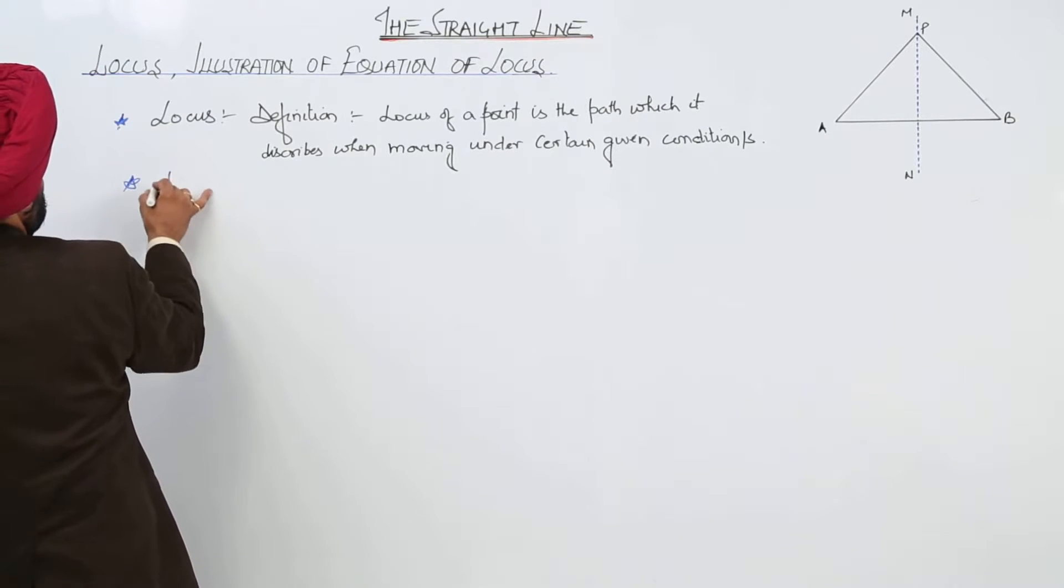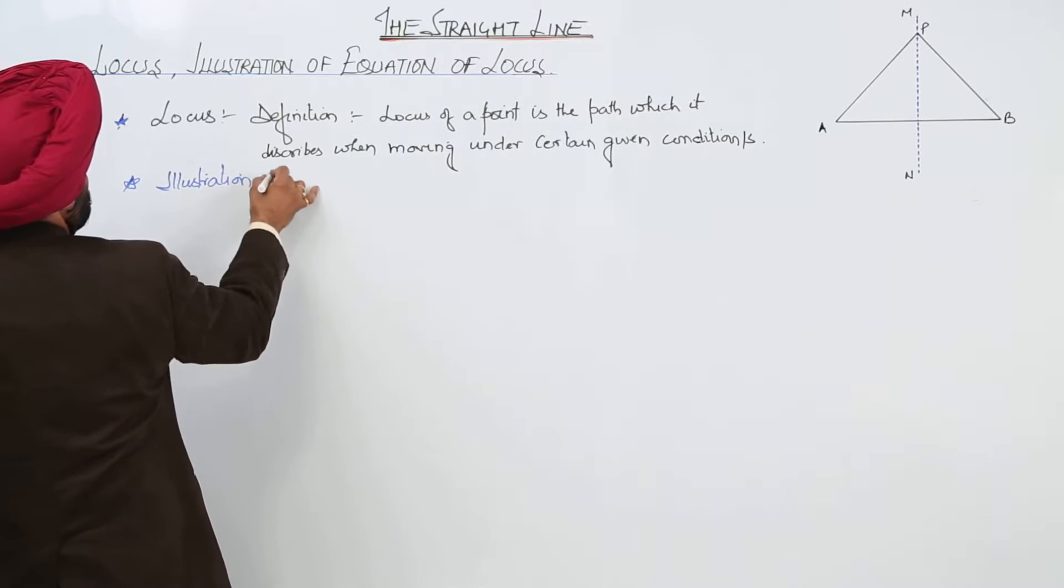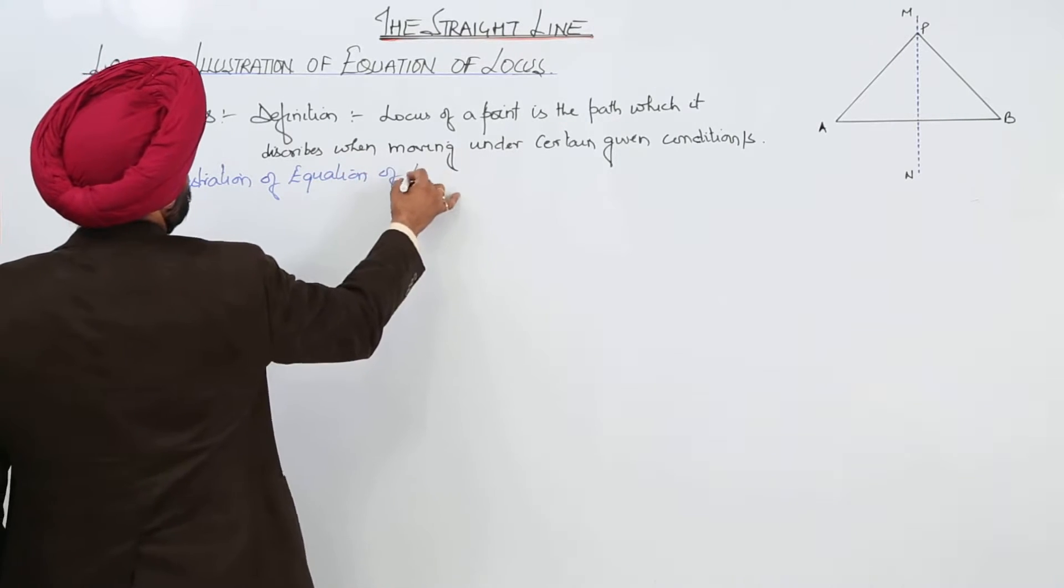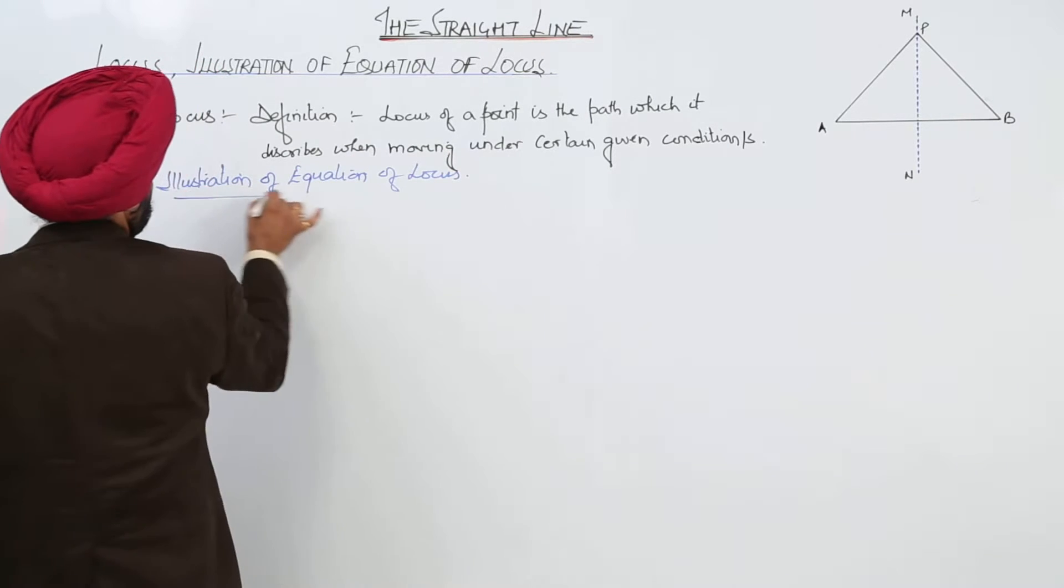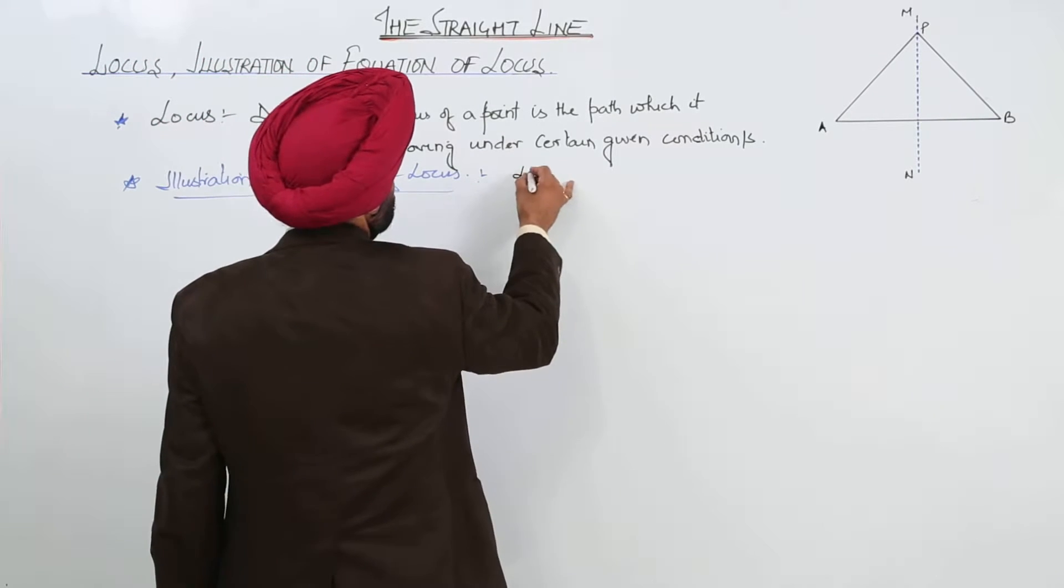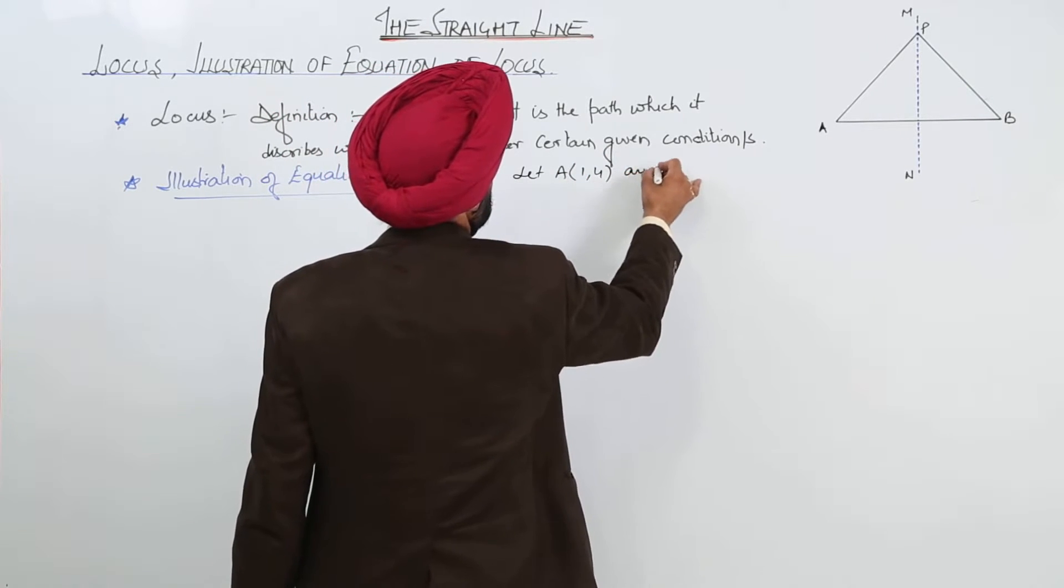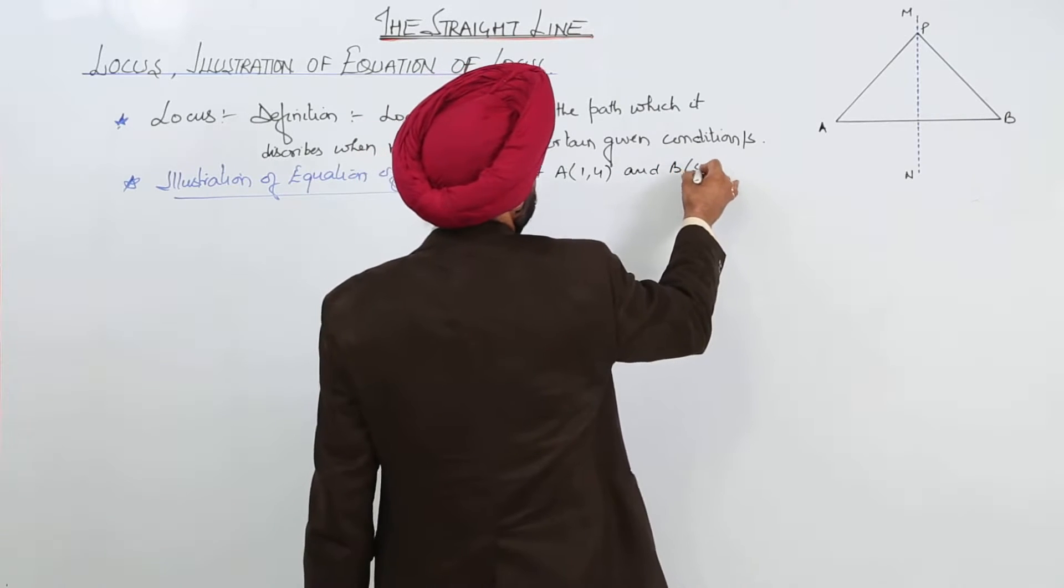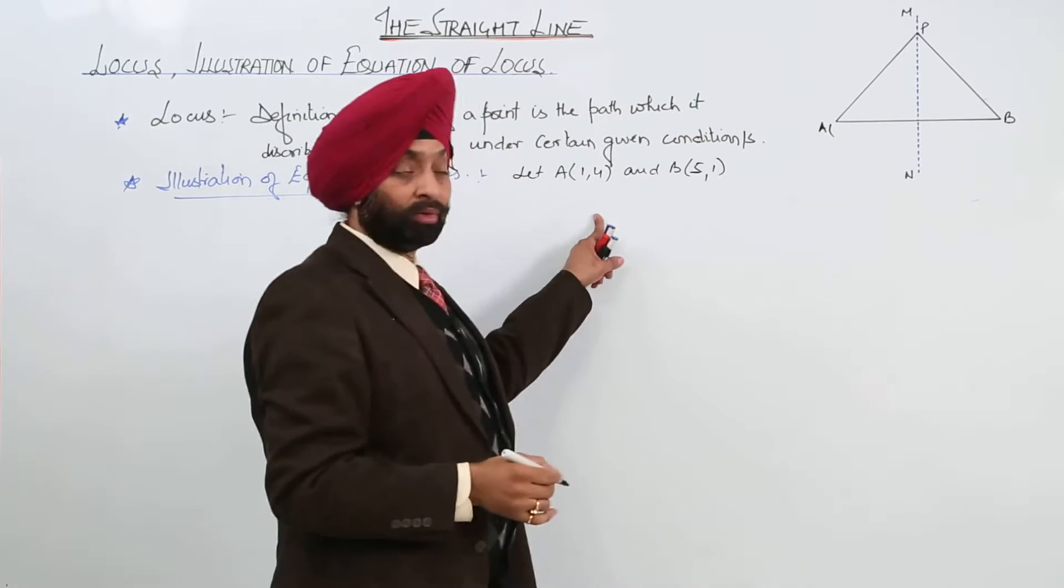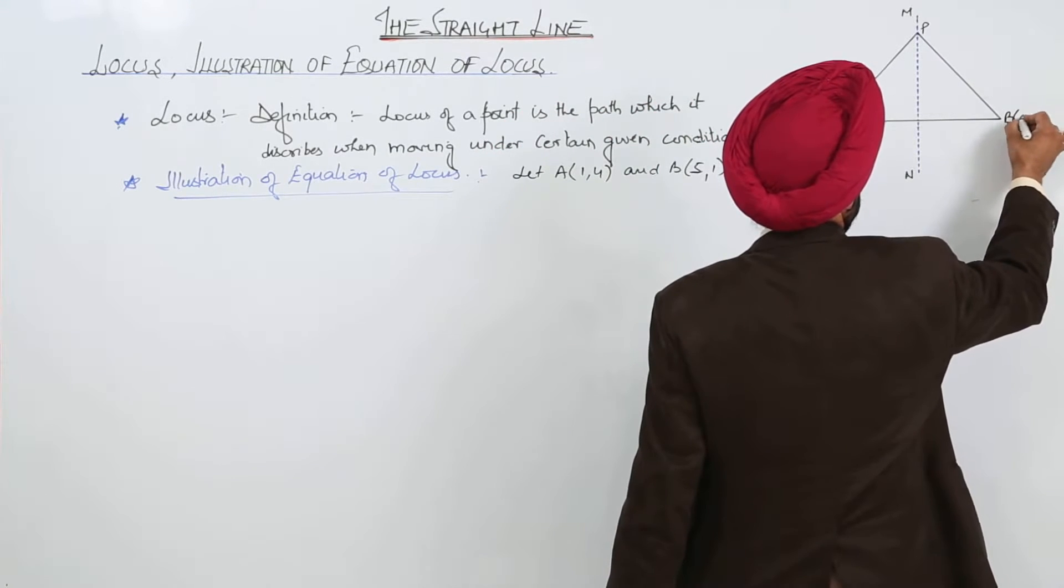Now, number two, illustrations of equation of locus. Now, let's illustrate it. Let capital A with any of the coordinates, let it be 1, 4 and capital B be 5, 1. Now, here A, I have taken what coordinates? 1, 4. So, let A be 1, 4 and B is 5, 1.